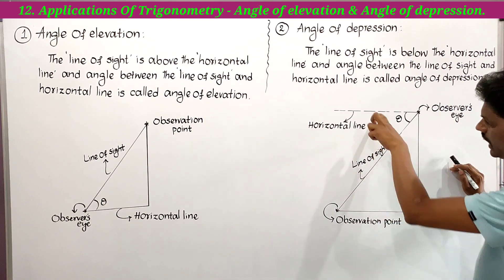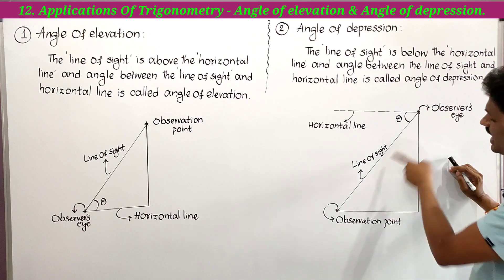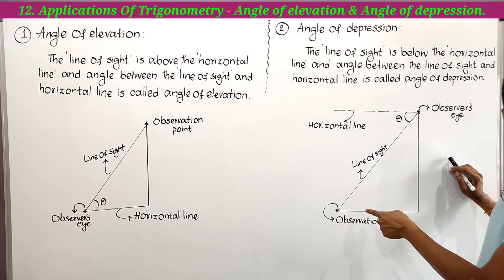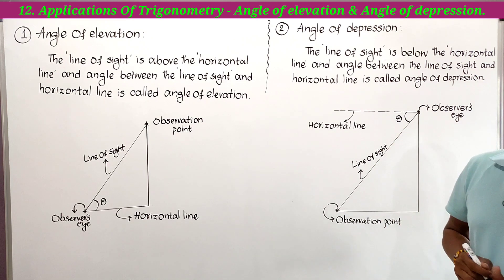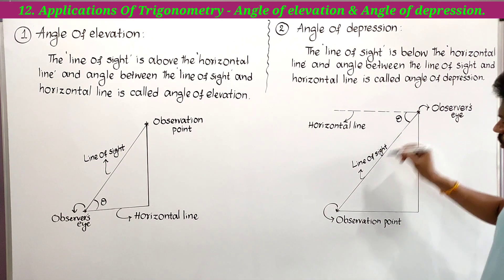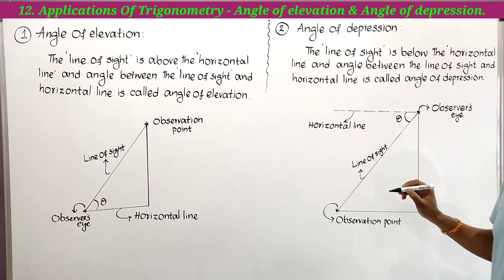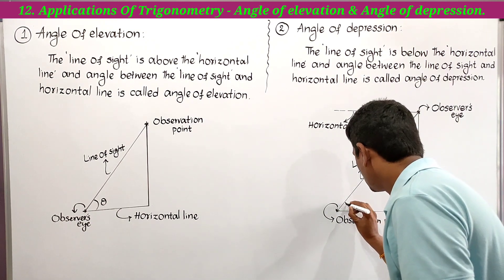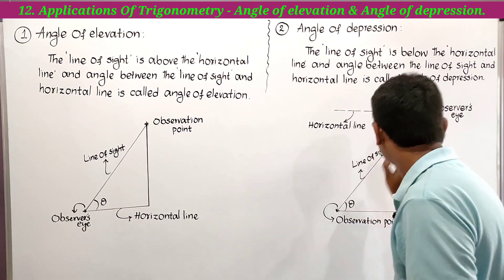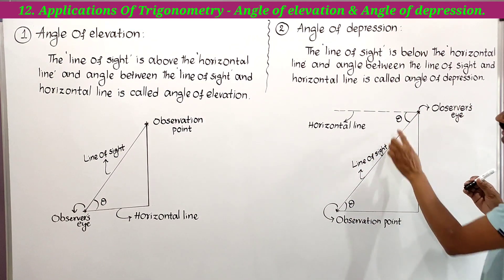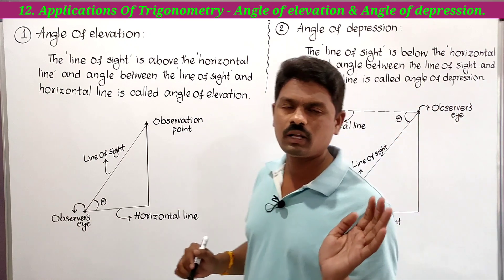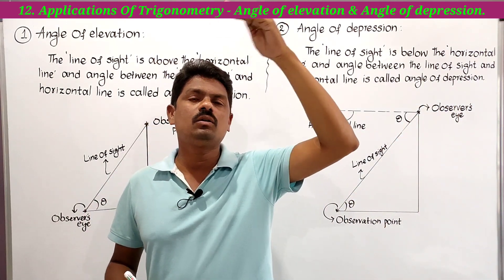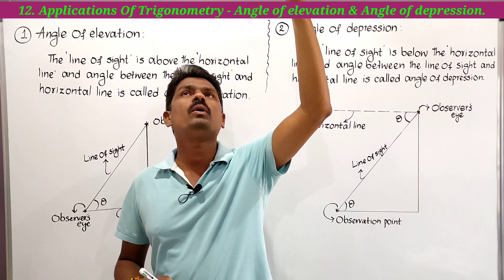Here, parallel lines are cut by a transversal. If a transversal intersects two parallel lines, then the corresponding angles are equal and the alternate angles are equal. These two angles are alternate angles, so if one is theta, the other is also theta. Since alternate angles are equal, the angle of depression from above equals the angle of elevation from below.